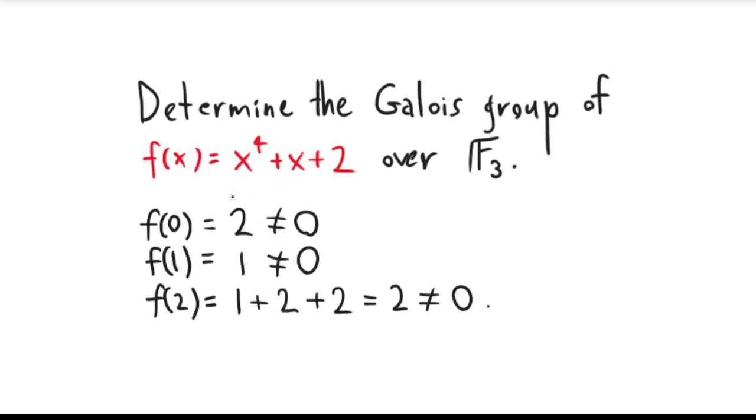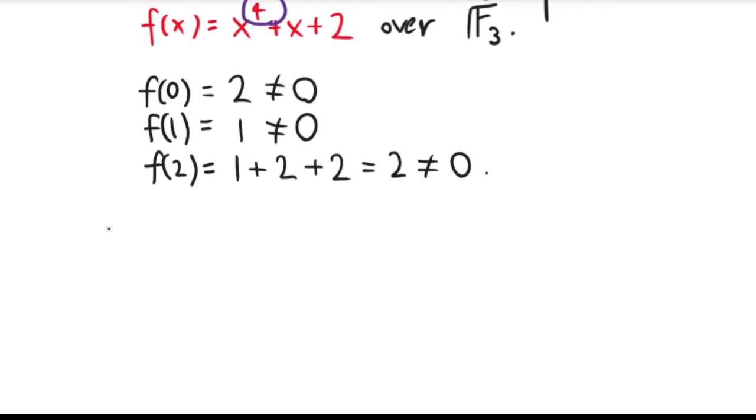And f(2), what would this be? Well, it would be 16, which modulo 3 is equal to 1 plus 2 plus 2, so this becomes 2 in F_3, which is non-zero. So this polynomial, indeed, does not have any roots in F_3. However, classic mistake, does that mean the polynomial is irreducible? It does not. And that's because this is a degree 4 polynomial.